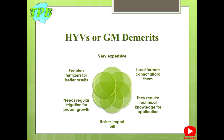However, GM and HYV seeds also have some demerits. These seeds may be very expensive and local farmers might not be able to afford them. Since they are imported, they also require technical knowledge for application, and many farmers might not know the right time for plantation or harvesting. These seeds raise Pakistan's import bill, need regular irrigation for proper growth, and require application of chemical fertilizers, which itself is very expensive.